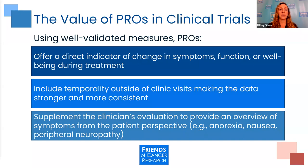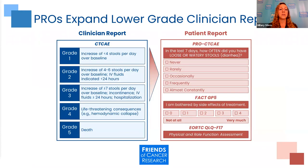PROs supplement the clinician's evaluation to provide an overview of symptoms from the patient perspective. Published studies have demonstrated discordance between physician and patient reports, which commonly includes underreporting of patient symptoms and severity. PROs expand lower-grade clinician reports — here we've provided an example of diarrhea, which is a commonly underreported side effect. Grade 3 and over are often what are considered for safety profiling, which means we may lose granularity from grade 1 and 2. With PROs, we get additional information about frequency and impact on the patient's life.